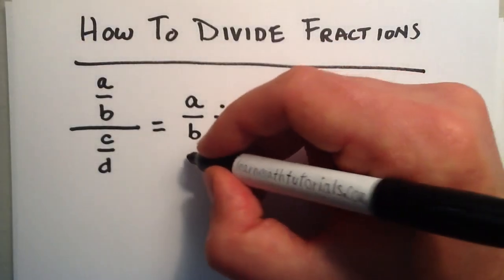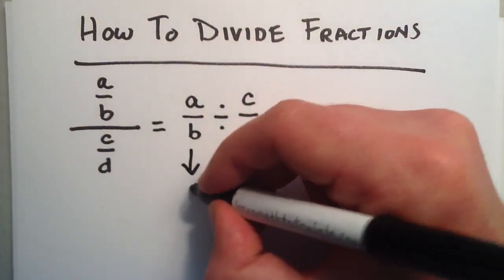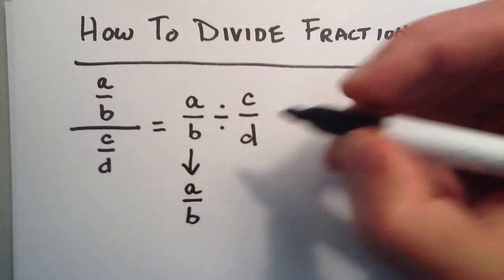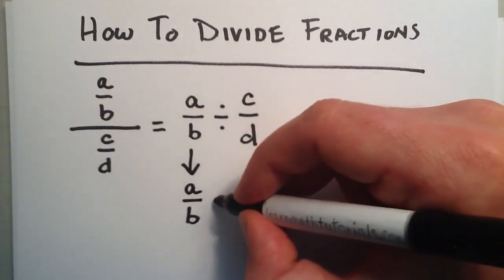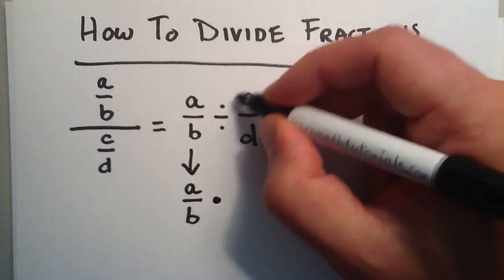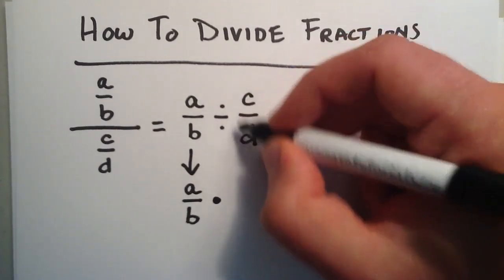Now how do we go about dividing a over b by c over d? Well, the trick is you just write down the first fraction, and instead of dividing, you're going to change this to a multiply sign, and you're going to invert the last fraction.